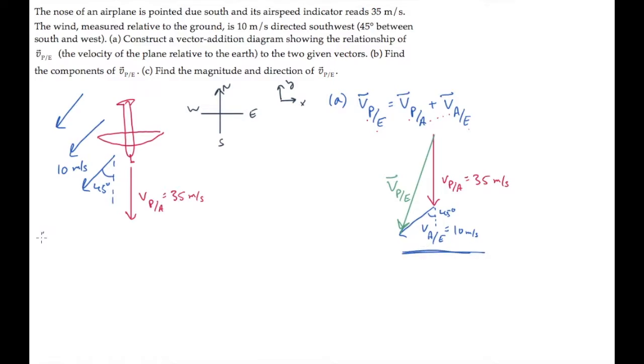That's the answer to part A. Part B asks us for the components of this vector. That's velocity of plane relative to earth, x and y. Those components are shown here in light blue. Notice that the x component equals this, which is in the negative x direction, with a length of 10 meters per second, times sine of 45 degrees. And that gives you minus 7.1 meters per second.